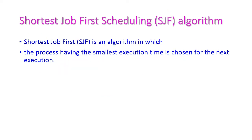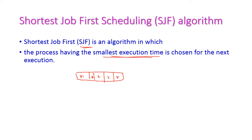Next is Shortest Job First algorithm. The process having the smallest execution time is chosen for next execution. For example, in the ready queue there are different processes waiting: P1, P2, P3, P4, P5. Here P1's size is very small, so P1 will be selected first because it is the shortest job. Shortest job means smallest execution time — the process with the smallest execution time is selected next for execution.